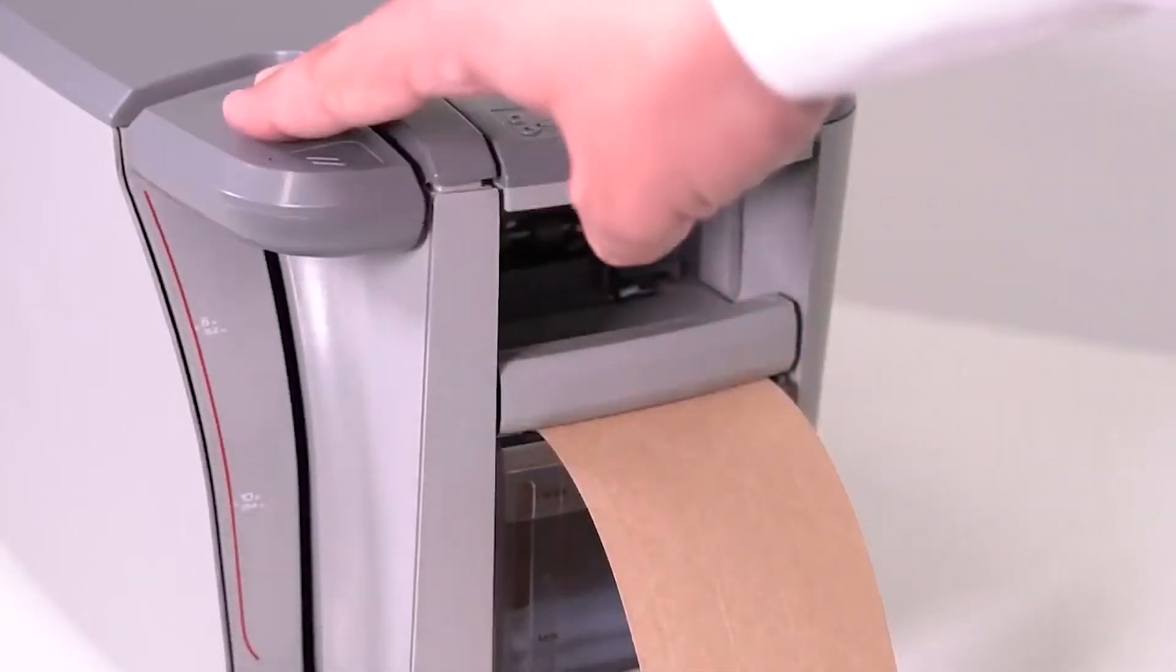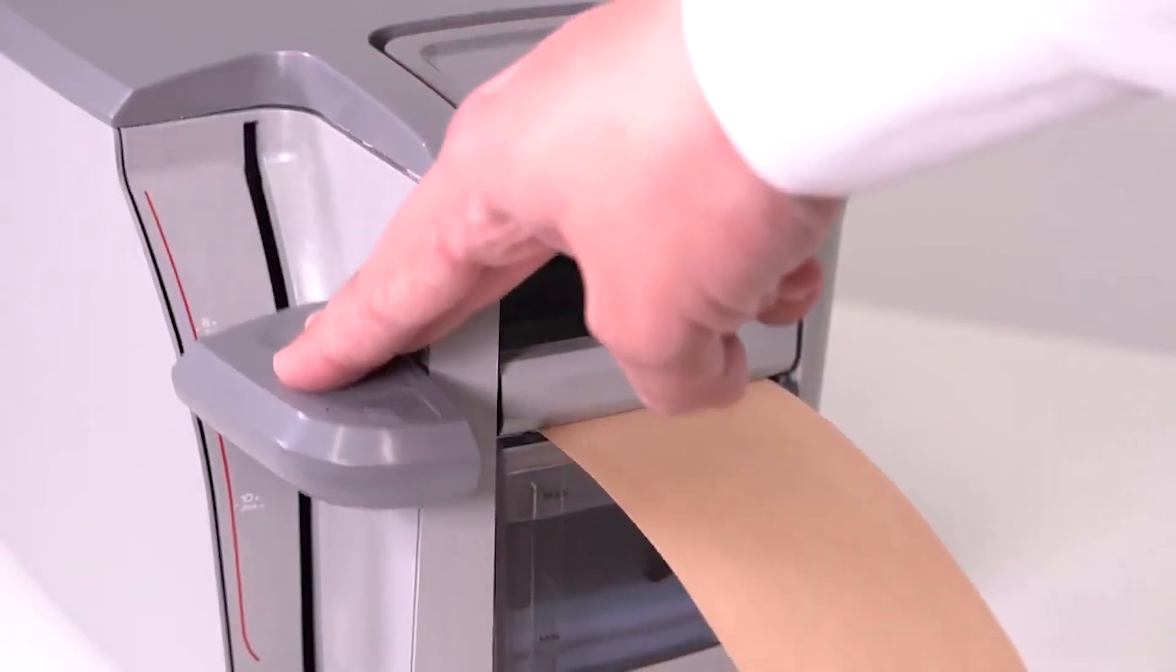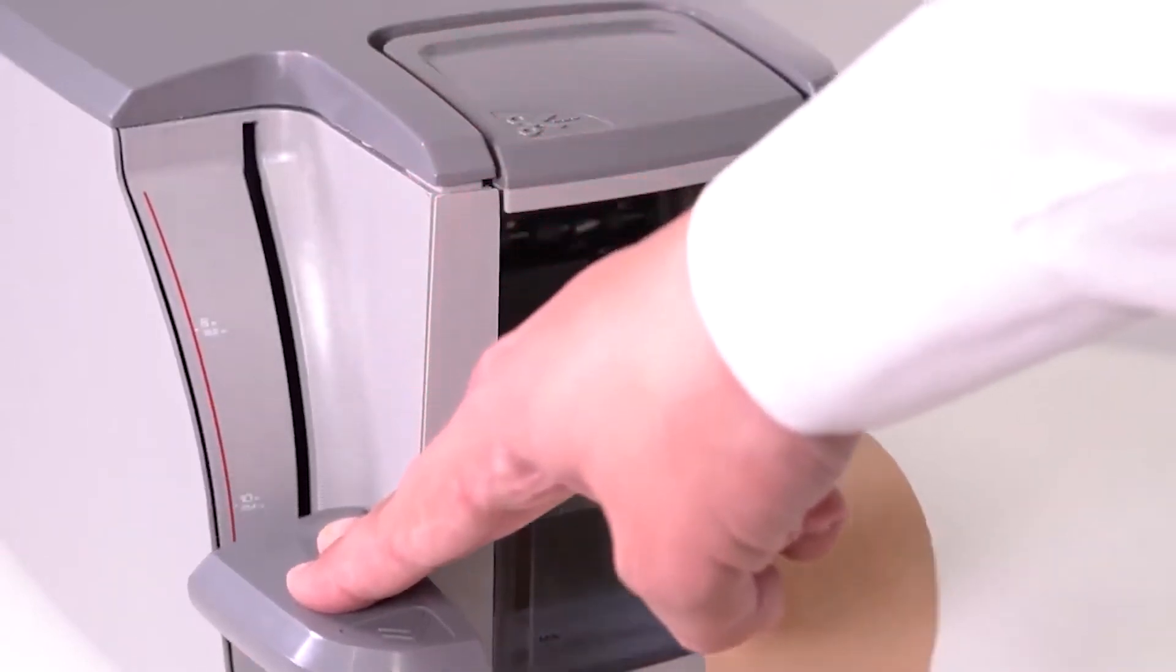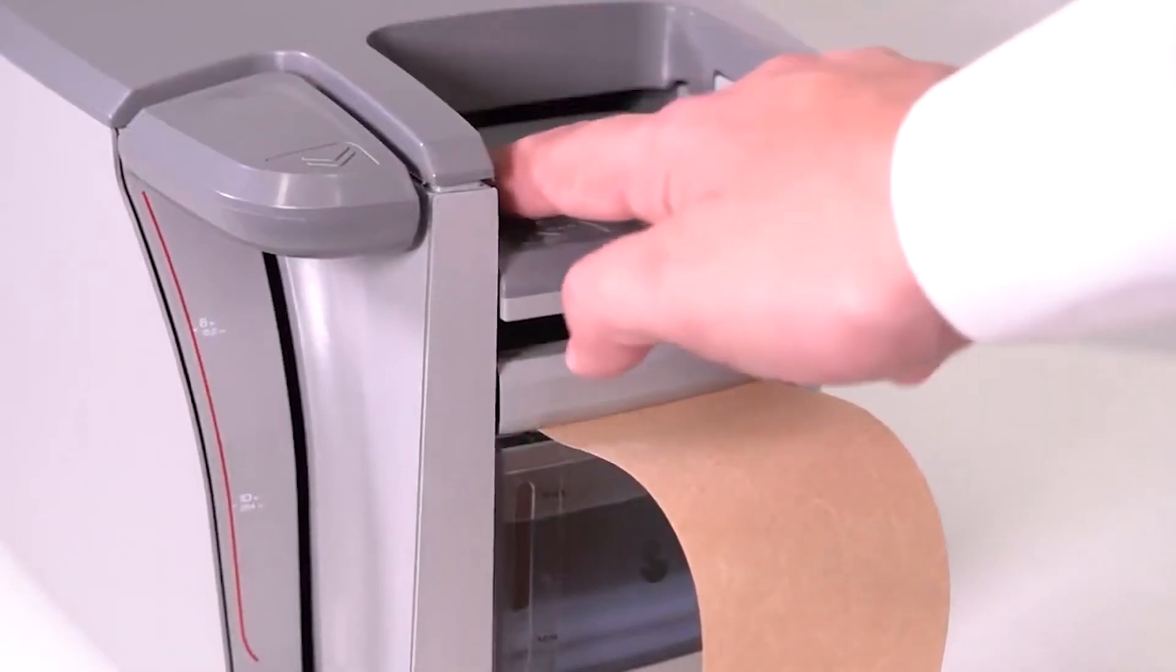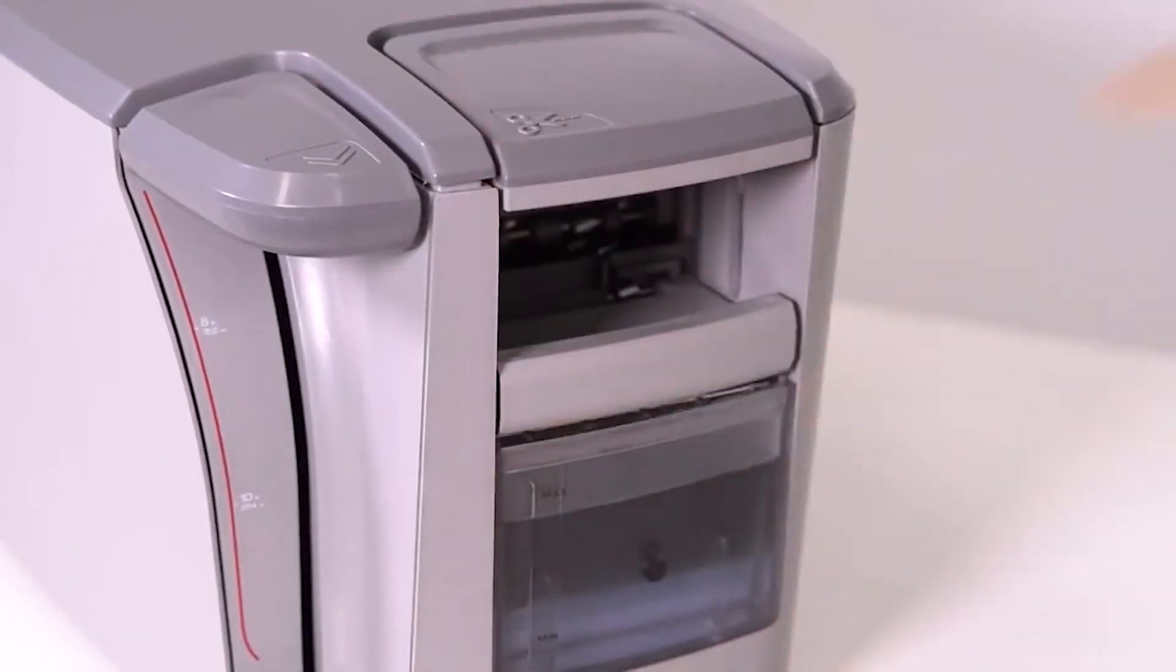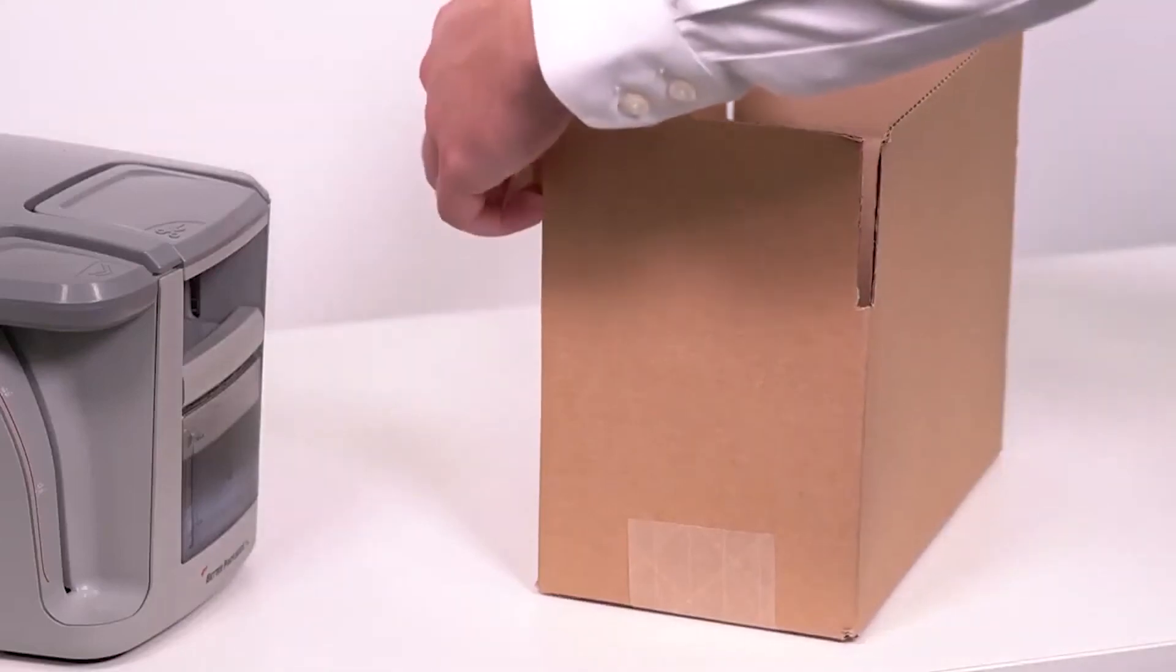If you need more length than this, simply release the lever and press it again to keep dispensing. When you've reached the length you need to seal your carton, press down on the cutter, take the tape and seal your carton.